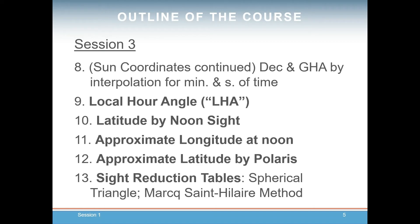Then we'll discuss getting your latitude by noon sight. At that noon sight you can also approximate longitude. We can also approximate latitude by sighting on Polaris. Then we'll talk about the sight reduction tables, which we use to calculate our position. In that session we'll talk about the spherical triangle and the Marcq St. Hilaire method, which is the method we'll be using to determine our location using celestial navigation.